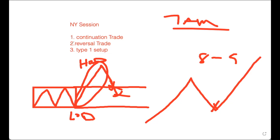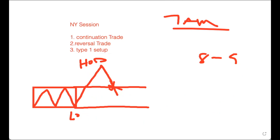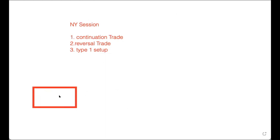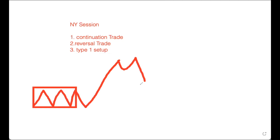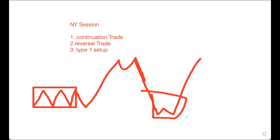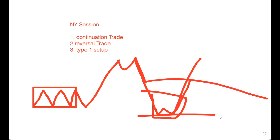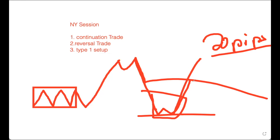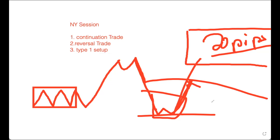The other setup is the reversal trade. Let's say you have your Asian range and price does this, gets a type 1 setup during London, works its way down, and by the time you get to the US session you're basically at the low of the day - just looking for a reversal trade. Typically reversal trades go straight to the 50, giving you about 20 pips in the US session. Continuation trades typically give you more, but in New York your goal is at least 20 pips trading back to the 50 EMA.